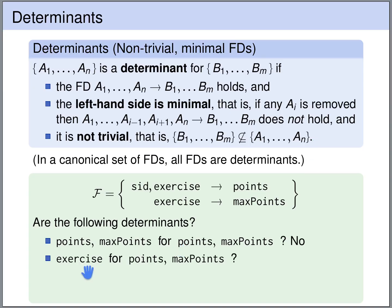What about: is exercise a determinant for {points, max_points}? The exercise uniquely determines the maximum number of points, but the exercise alone does not determine the number of points that the student has obtained. So this is not even a valid functional dependency, and therefore it's not a determinant.